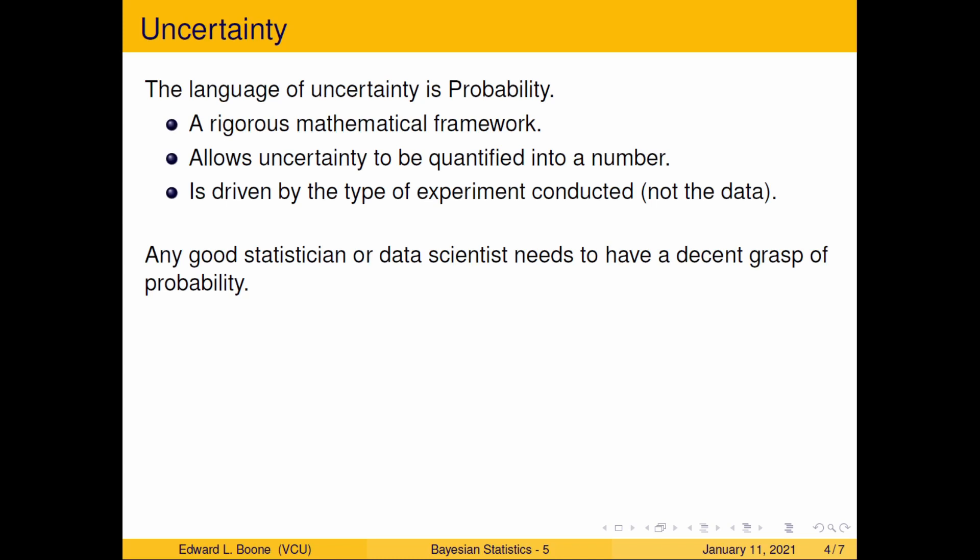The language of uncertainty is probability. What probability is, is a rigorous mathematical framework that allows uncertainty to be quantified into a number. We can take how much uncertainty we have and actually assign it a value, which is very important because it tells us how much uncertainty we have. This probability is driven by the type of experiment that you conducted — it's not driven by your data, which some people think it is. There is empirical probability, which is based off of data, but it's not driven by your data. Any good statistician or data scientist needs to have a decent grasp of probability, because everything is linked to it one way or another.